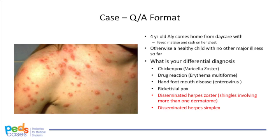Let's start with a case. Allie, a 4-year-old female, was sent home from daycare with a mild fever, malaise, and a rash on her chest. Her parents bring her to see you the next day as her rash continues to progress. She has a very itchy rash with mixed lesions — macules, papules, and vesicles with some crusting. She is otherwise a healthy child. The differential diagnosis includes chickenpox, erythema multiforme, hand-foot-mouth disease, rickettsial pox, and rarely disseminated herpes zoster or herpes simplex infection. Given the rash is itchy and has papules and vesicles in all different stages, you recognize it as most likely being varicella.